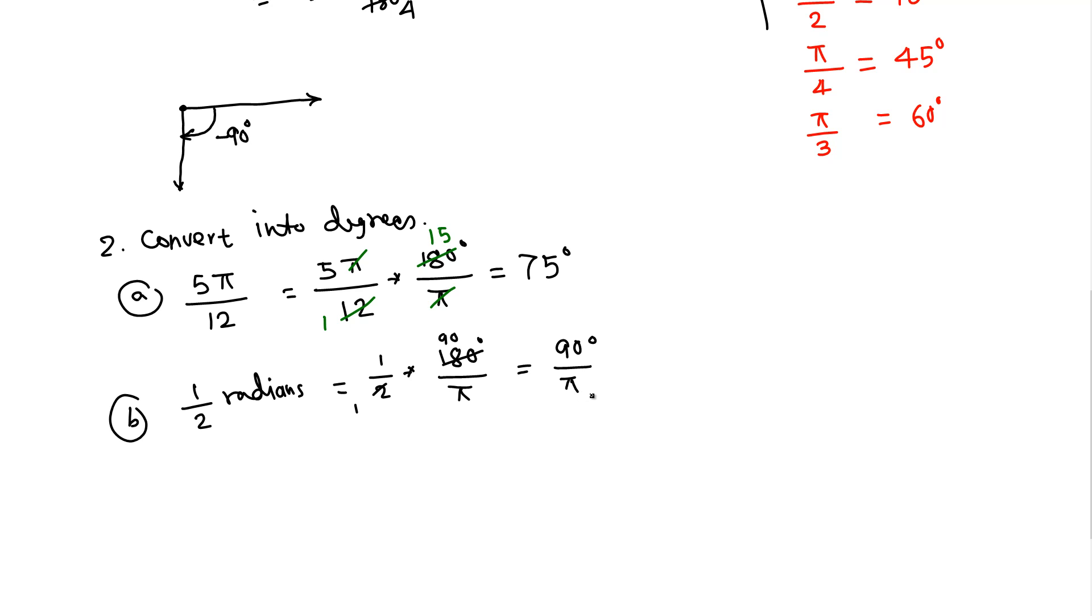Now 2 goes into 180 ninety times, so 90 over π degrees. This is the exact form, or you can replace π by 3.14, and whatever you get will be an approximation, but this is the exact value.